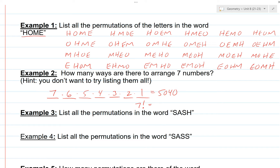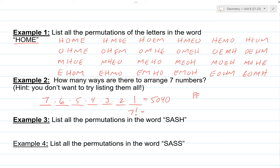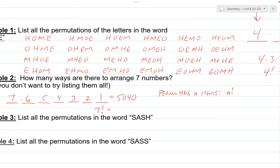So anytime we want to find out how many permutations there are for n items, it's always going to be n factorial.